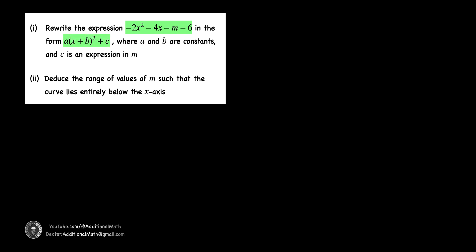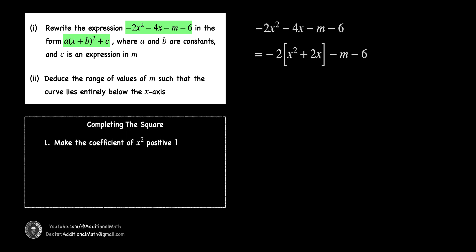The first part of the question requires us to convert an expanded quadratic expression to completing the square form. We will begin by making the coefficient of x squared to be positive 1. This can be done by factoring out negative 2 from both the coefficient of x squared and x.